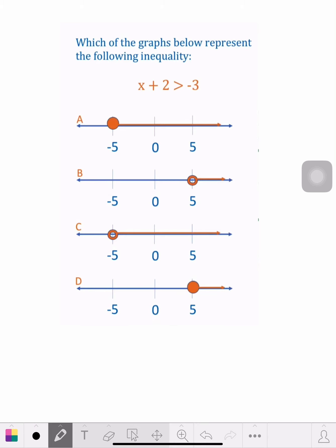So we got x plus 2 is greater than negative 3. So what we have to do, we have to move the 2 over to that side. Get the x by itself. So it's a plus. So the opposite of plus is a negative. It's minus. So we subtract 2 from each side.